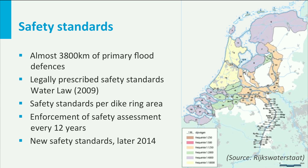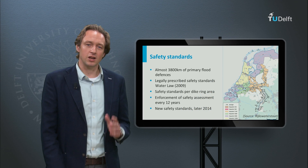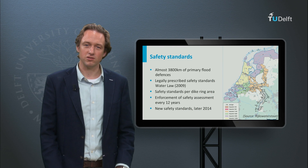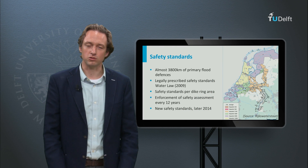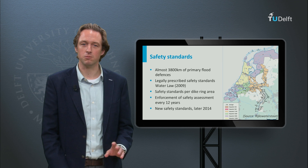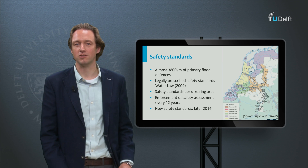For example, for dike rings along the rivers in the Netherlands, safety standards between 1 in 1,250 to 1 in 250 per year are applied. In other parts of the world, often lower safety standards are used — for example, 1 in 100 per year in most of the United States.